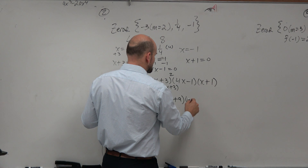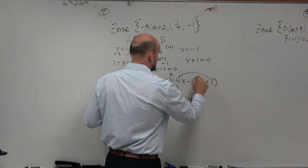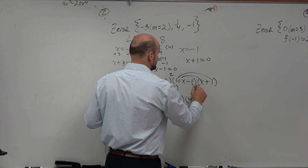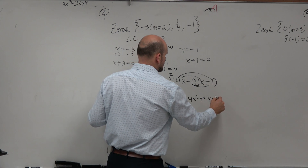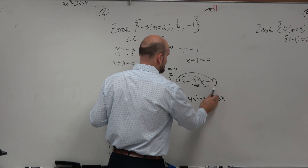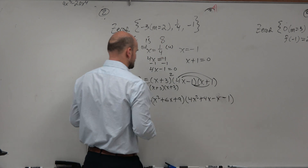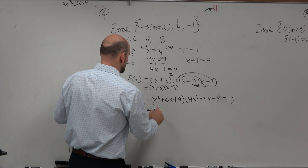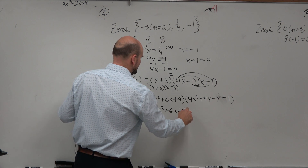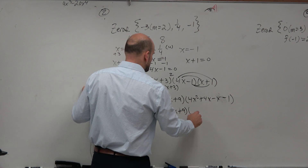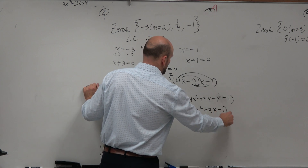Now for (4x − 1)(x + 1), you can multiply this out using the distributive property. That gives you 4x squared plus 4x minus x minus 1 — so 4x squared plus 3x minus 1.